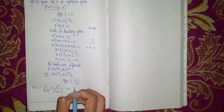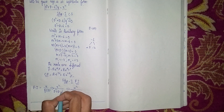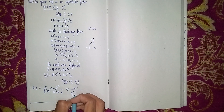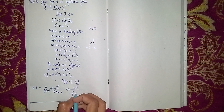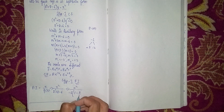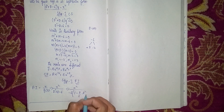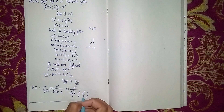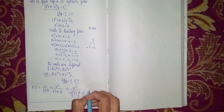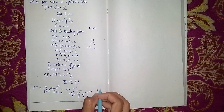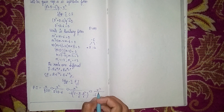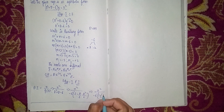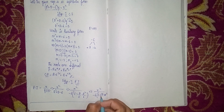We take -6 outside: PI = x² / (-6(1 - (D/6) - (D²/6))). Taking -6 outside gives -1/6 · [1 - (D + D²)/6]^(-1) · x².